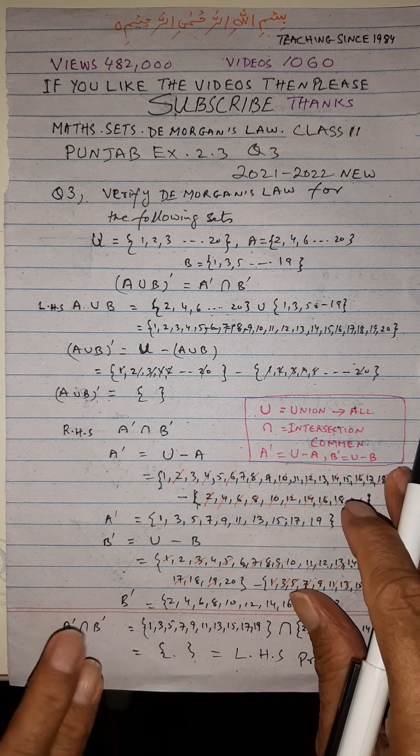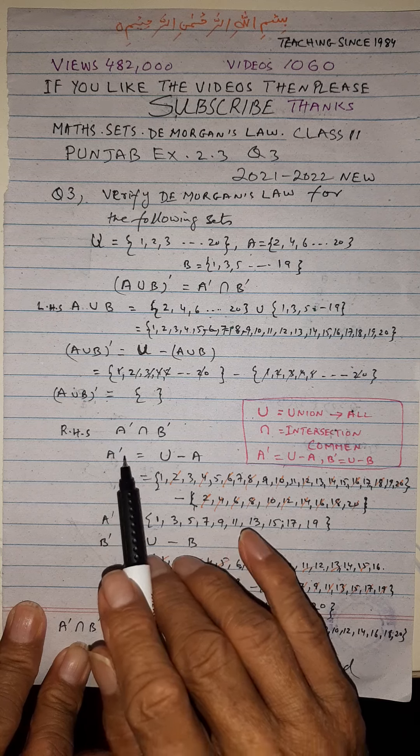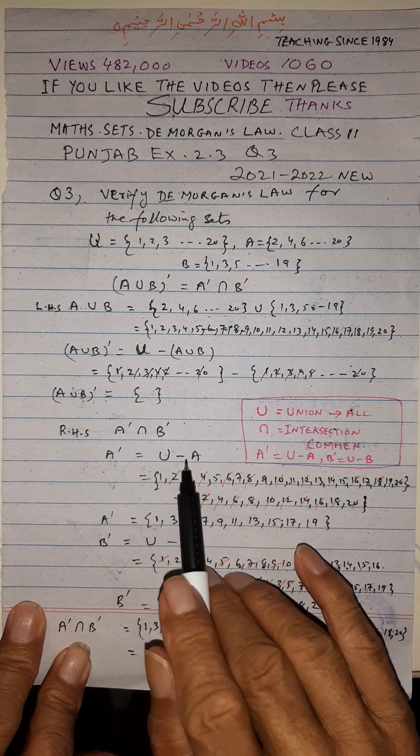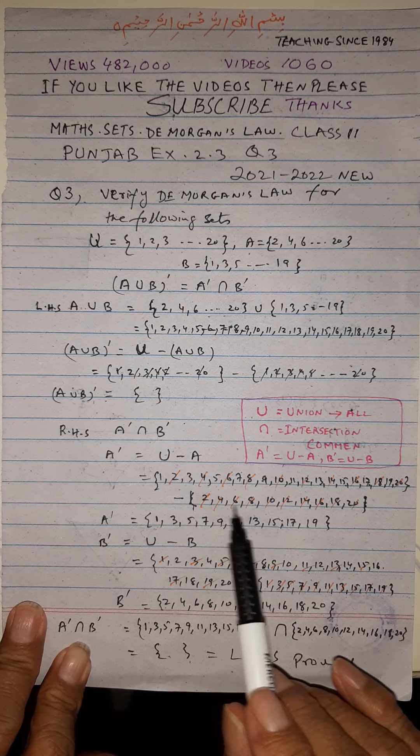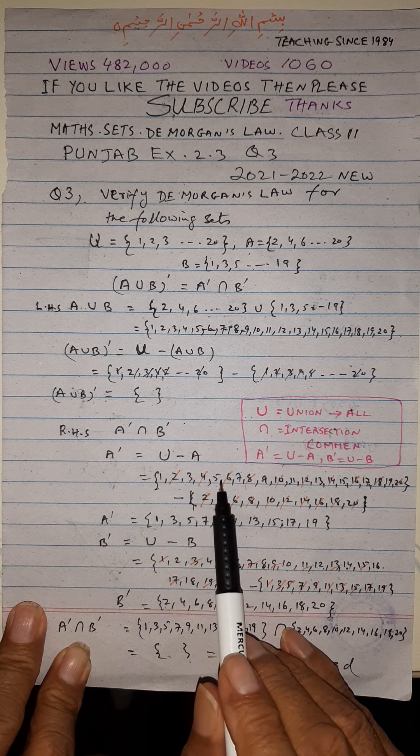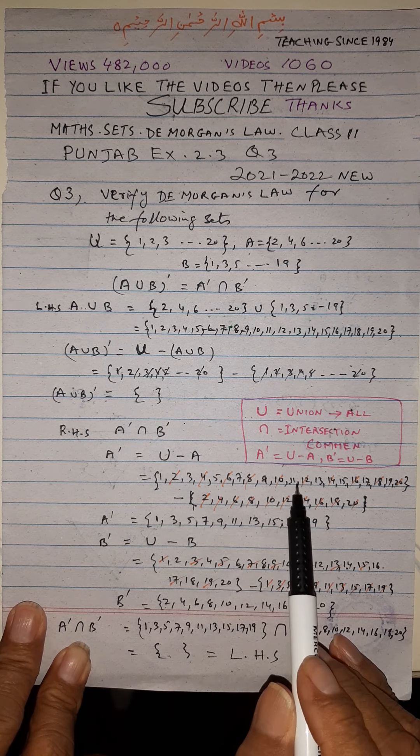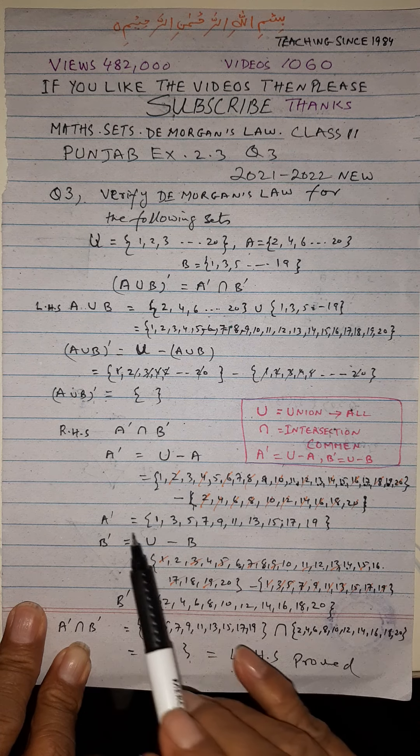Now it comes to the right hand side. Here is given A prime. What is A prime? A prime is U minus A. U is 1 to 20, and A prime is 1, 3, 5, 7, 9, 11, 13, 15, 17, and 19. This is A prime.